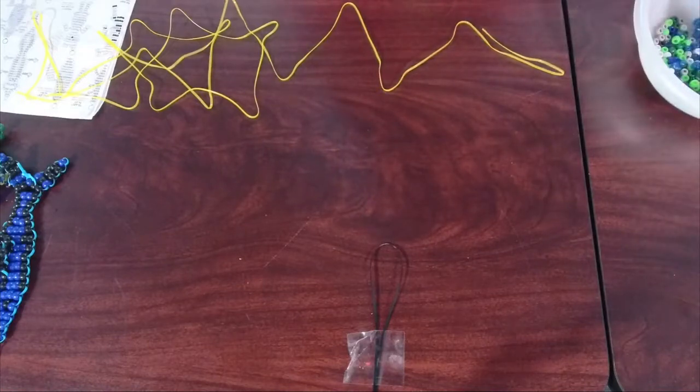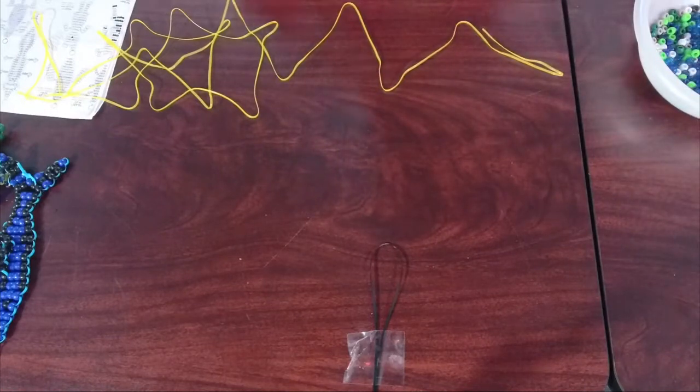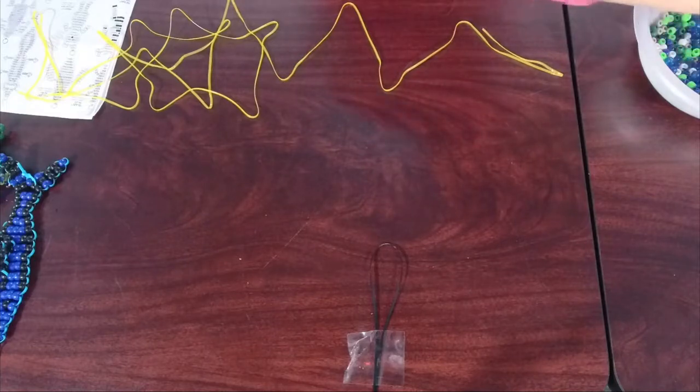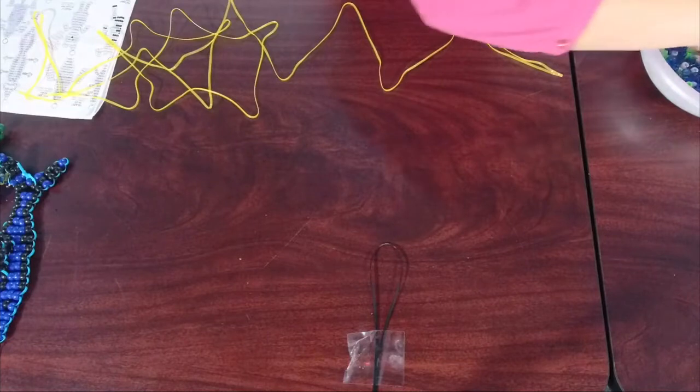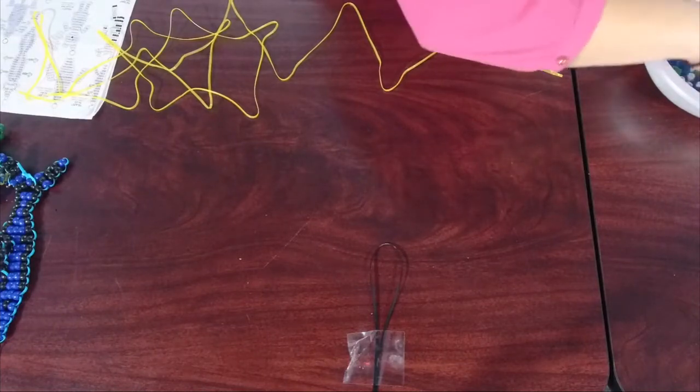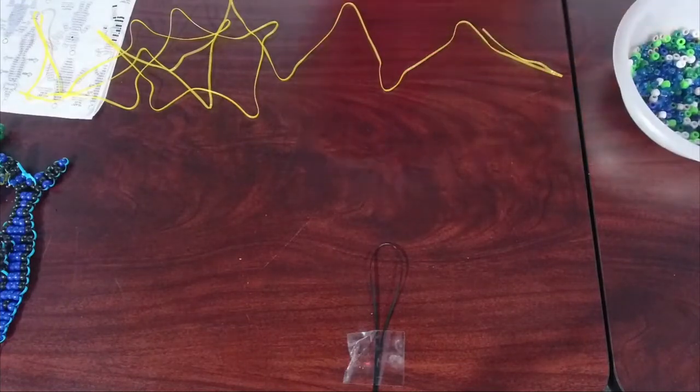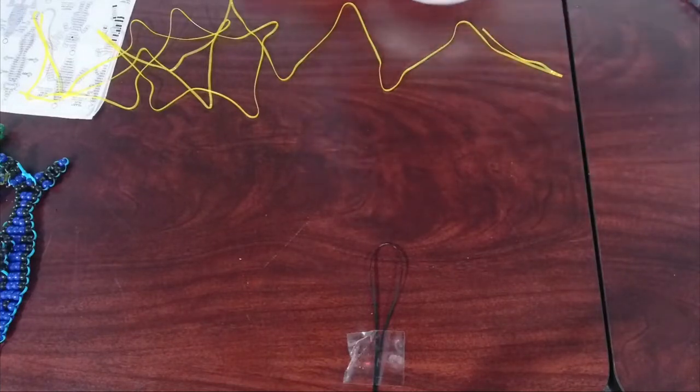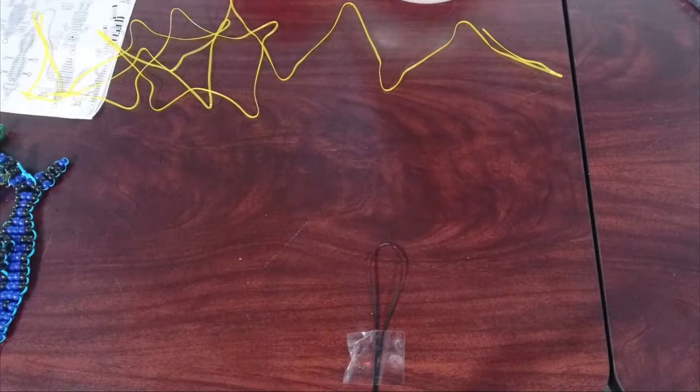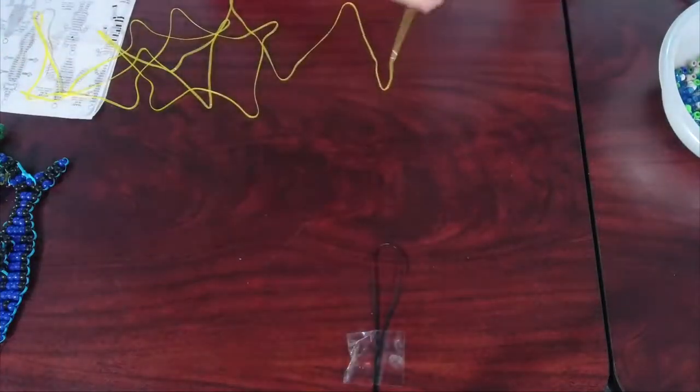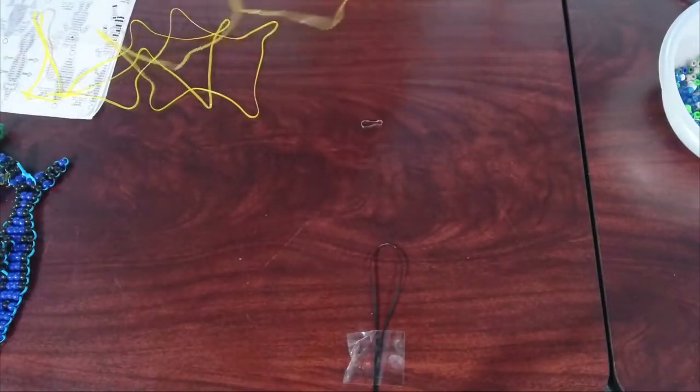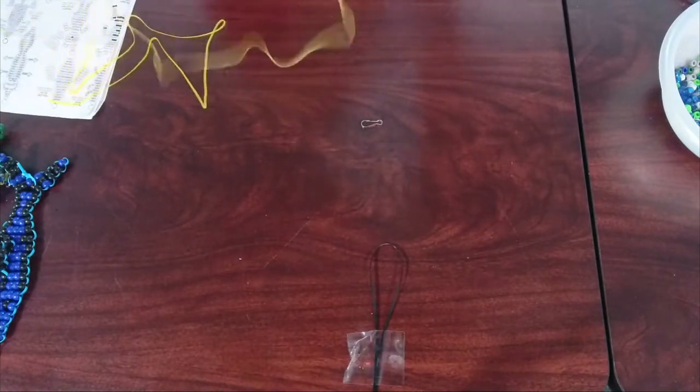The next thing we do after we measure out our three yards of cord - sorry about that noise - is we're going to find the keychain that's in the kit. Put that down, gather your cord, and fold it in half. You want to make the ends meet.